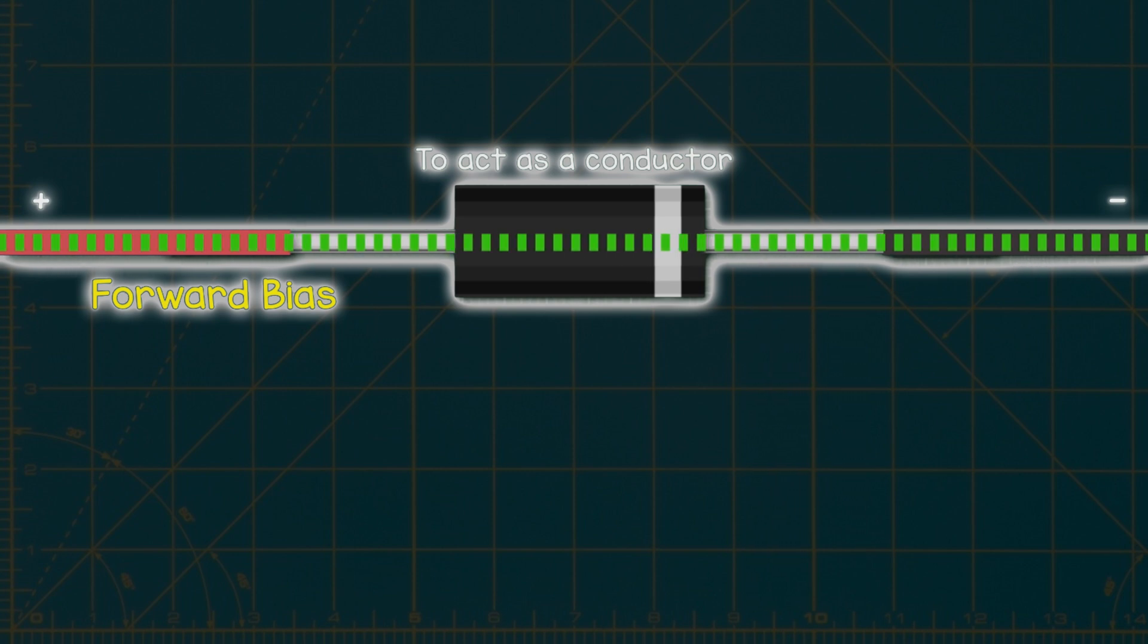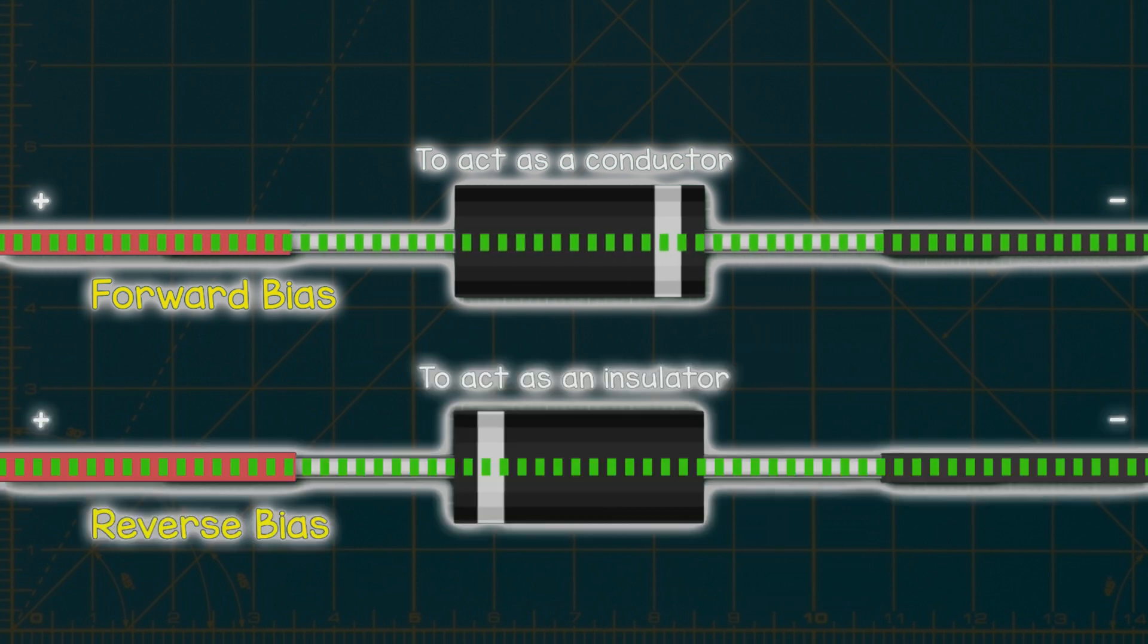If we flip the diode, it acts as an insulator, preventing current flow. This orientation is known as the reverse bias.